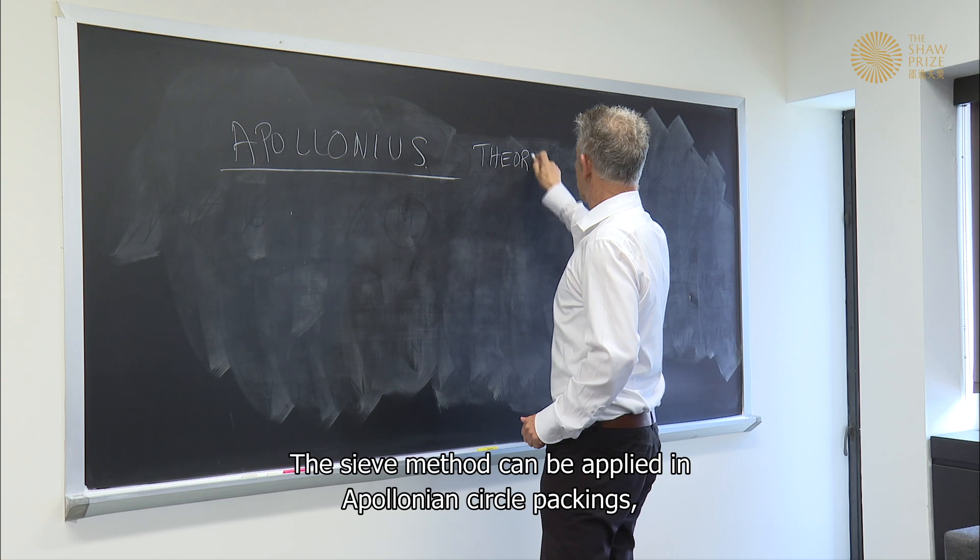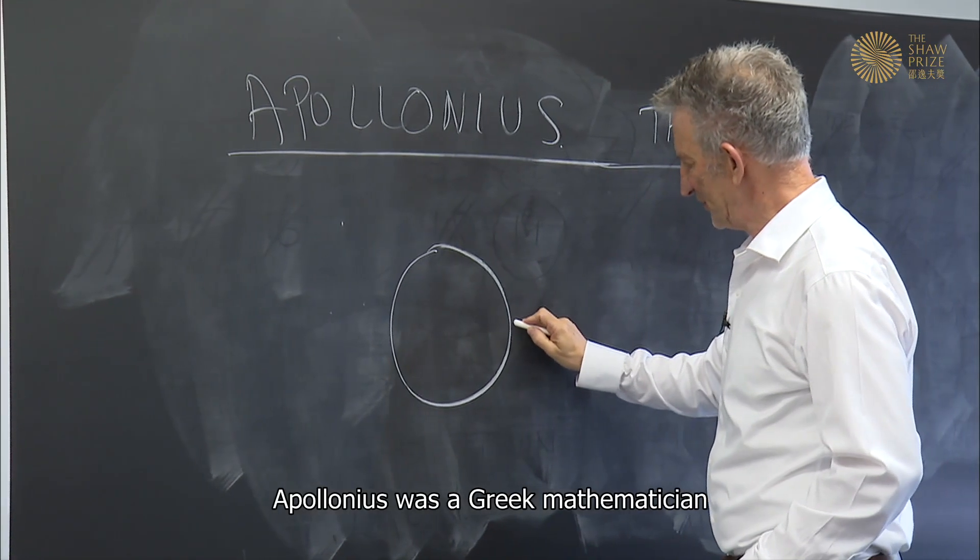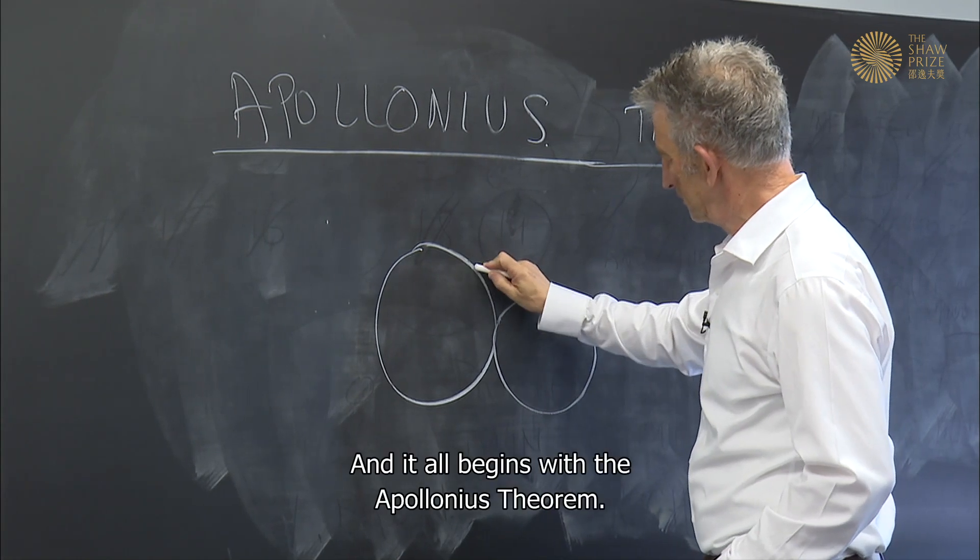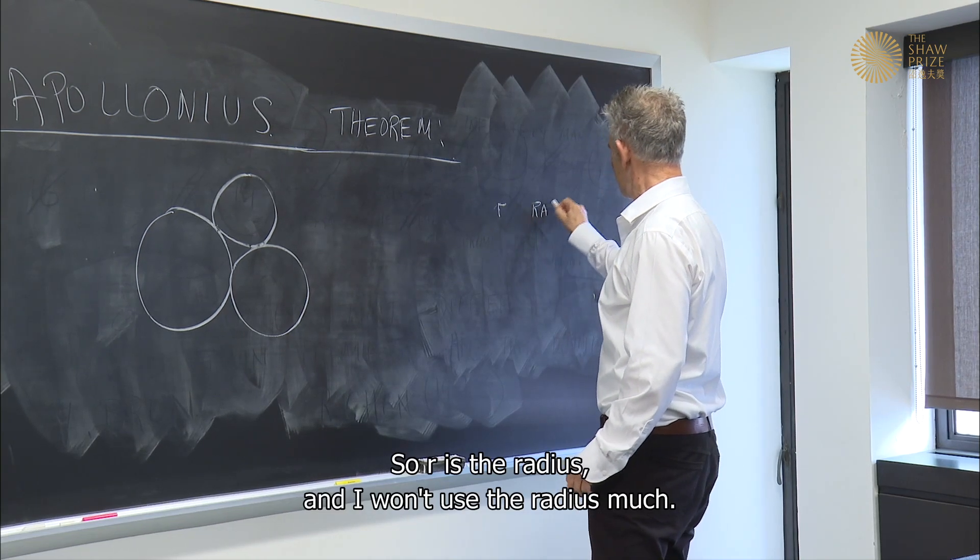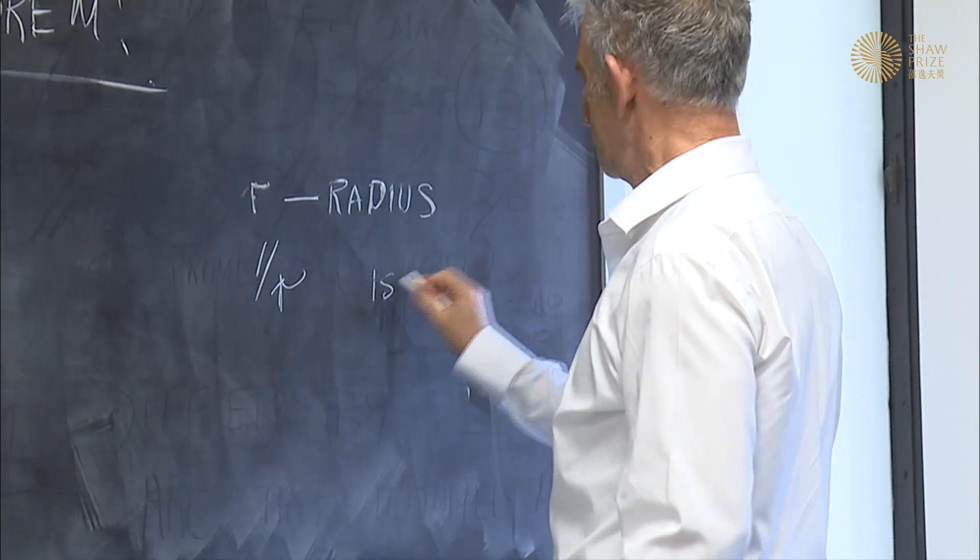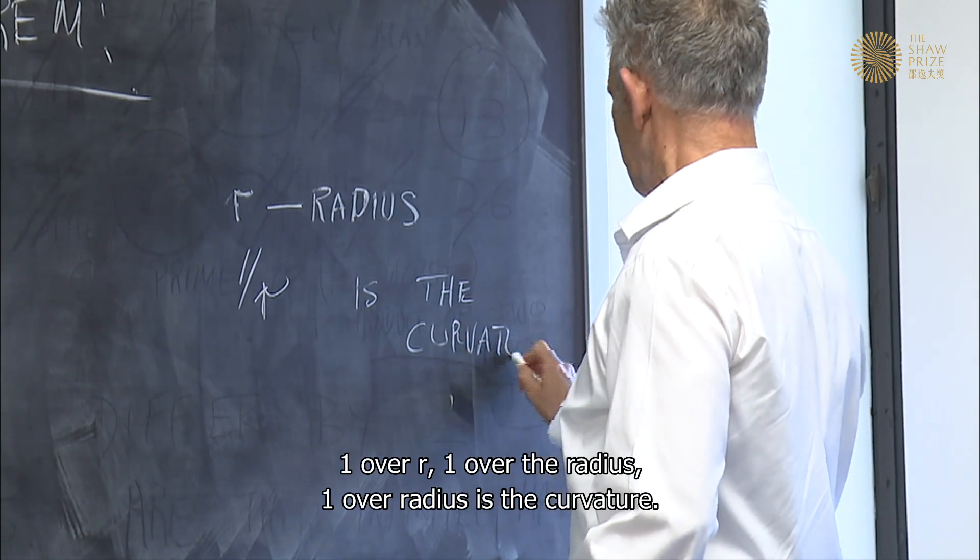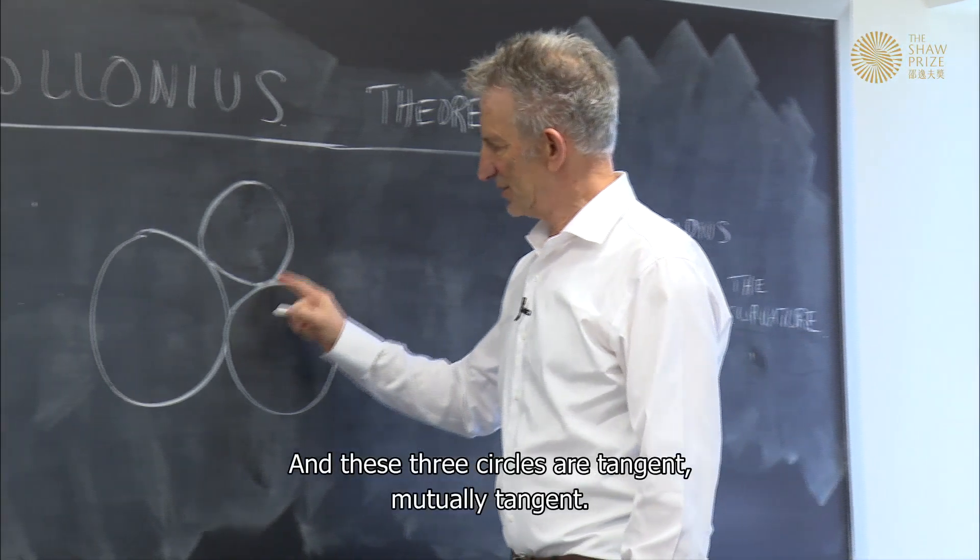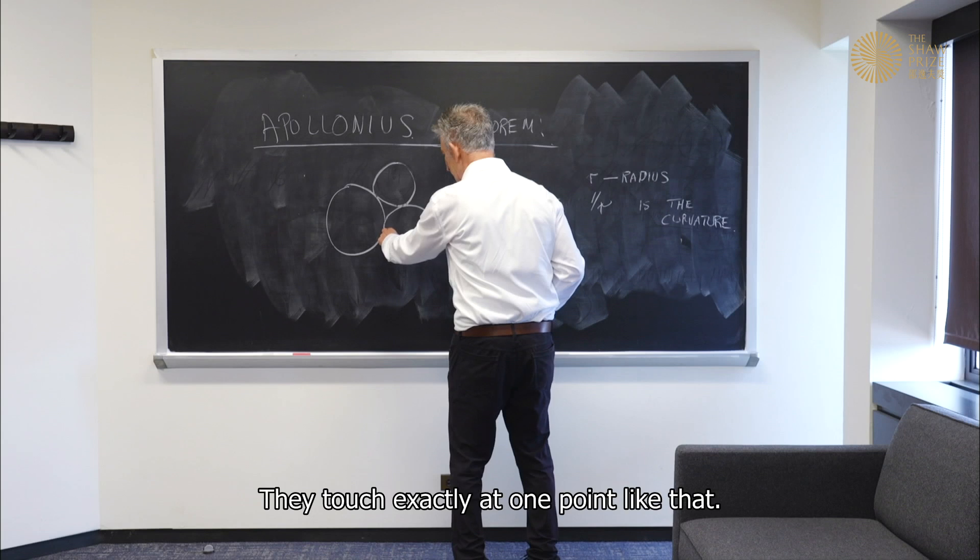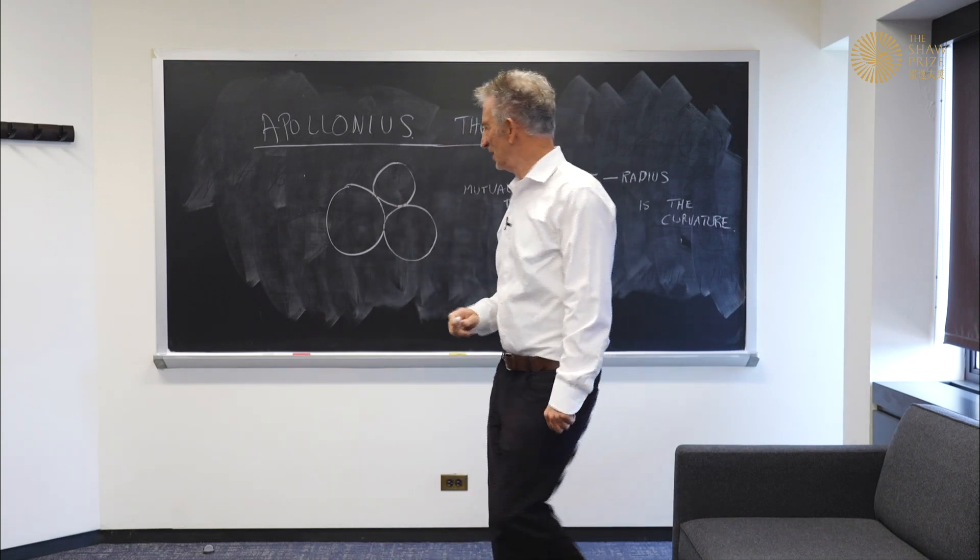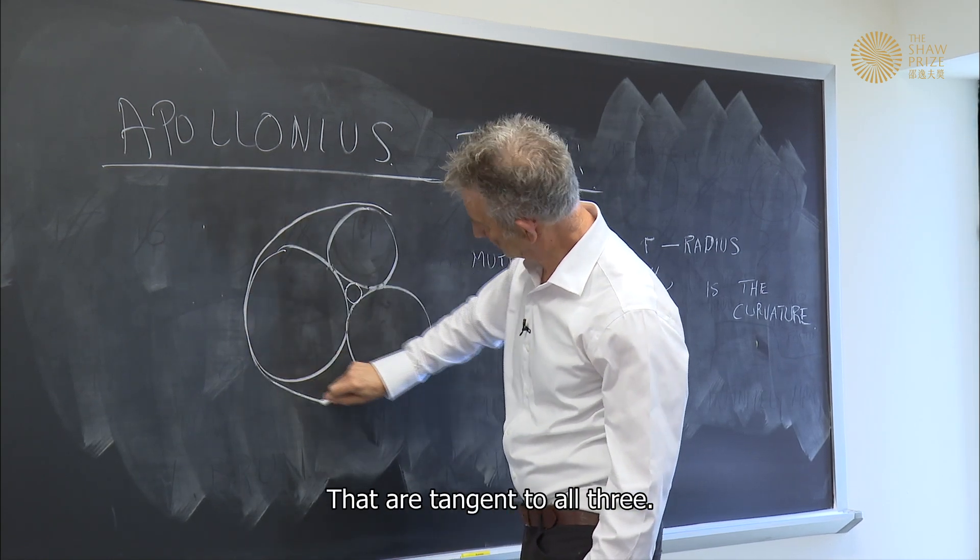The sieve method can be applied in Apollonian circle packings, a type of geometry. Apollonius was a Greek mathematician who worked with circles. And it all begins with the Apollonius theorem. So R is the radius. One over R, one over the radius, is called the curvature. And these three circles are tangent, mutually tangent. They touch exactly at one point like that.